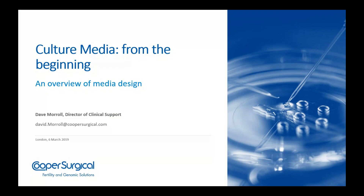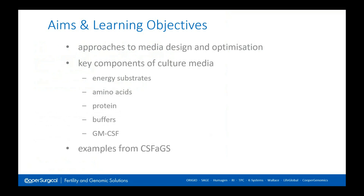I'm going to talk about culture media and give an overview of the components and such like. I'll talk about approaches to media design and optimisation, then briefly cover the key components of culture media — what they do and how they feed into the design of various forms of culture media. I'll specifically deal with energy substrates, amino acids, buffers, GM-CSF, and then we'll talk about examples from the Cooper Surgical ranges, which is really to demonstrate how media design reflects the embryonic needs rather than specifically about our products.